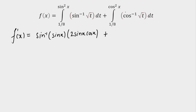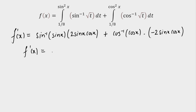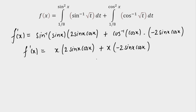For the second integral, putting the upper limit in the function gives cos⁻¹(cos x) — I'm not writing the mod. The differentiation of the upper limit gives −2 sin x cos x. So f′(x) = sin⁻¹(sin x) · 2 sin x cos x + cos⁻¹(cos x) · (−2 sin x cos x). In the first quadrant, sin⁻¹(sin x) = x and cos⁻¹(cos x) = x, so both terms cancel out exactly.